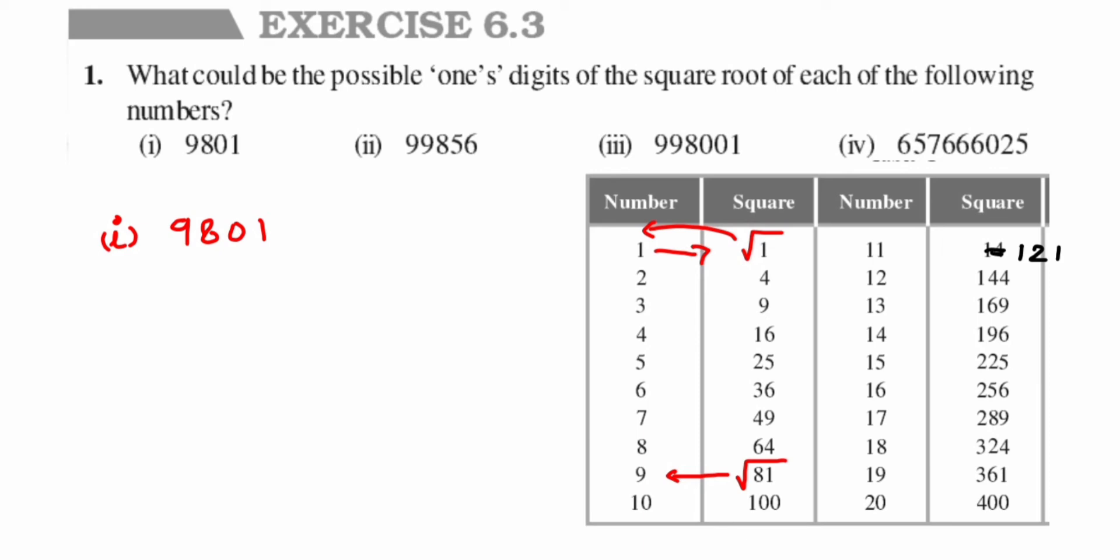I'll take one more number to explain this: we have 361. If I take a square root of 361, I'll get 19, means 9 will be present in the unit place because this number is ending with 1. Similarly, if I take 121, which is a square of 11, if I take a square root of 121, I'll get 11. So I'm getting again 1 in the unit place.